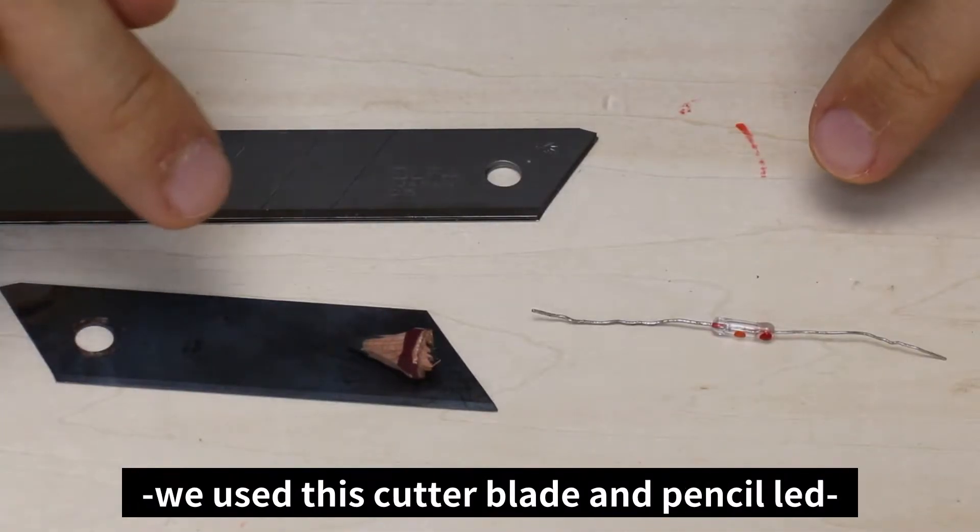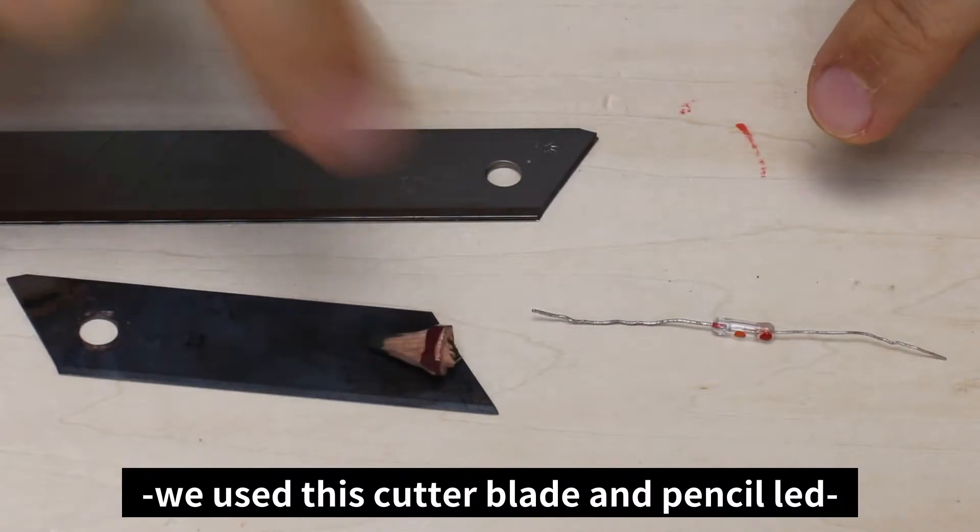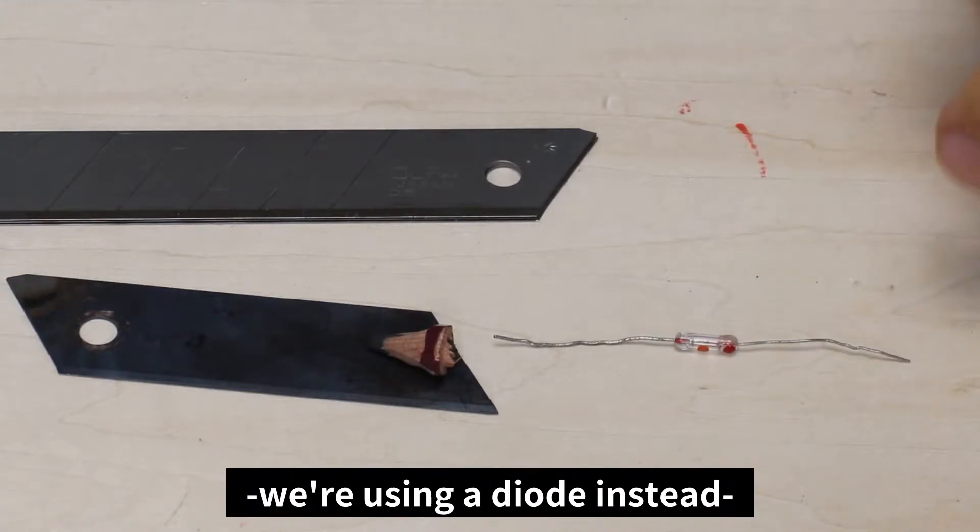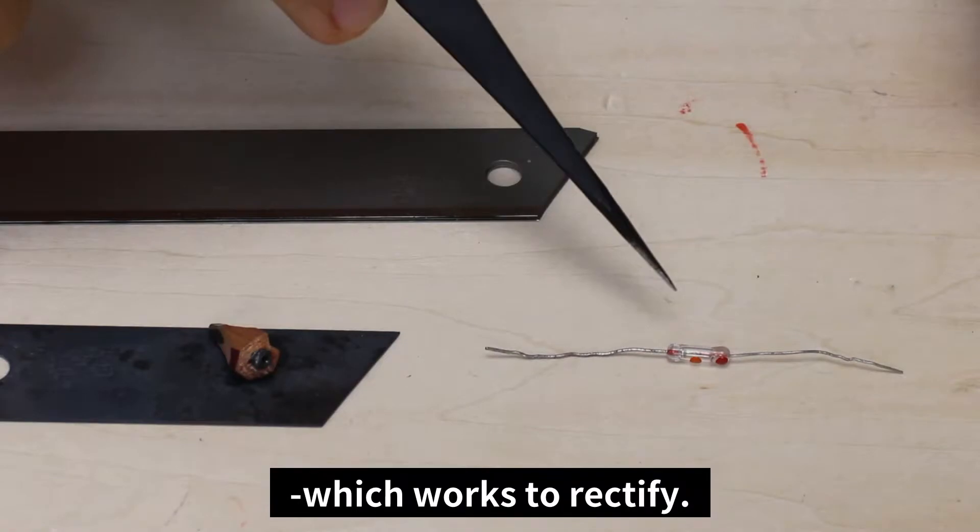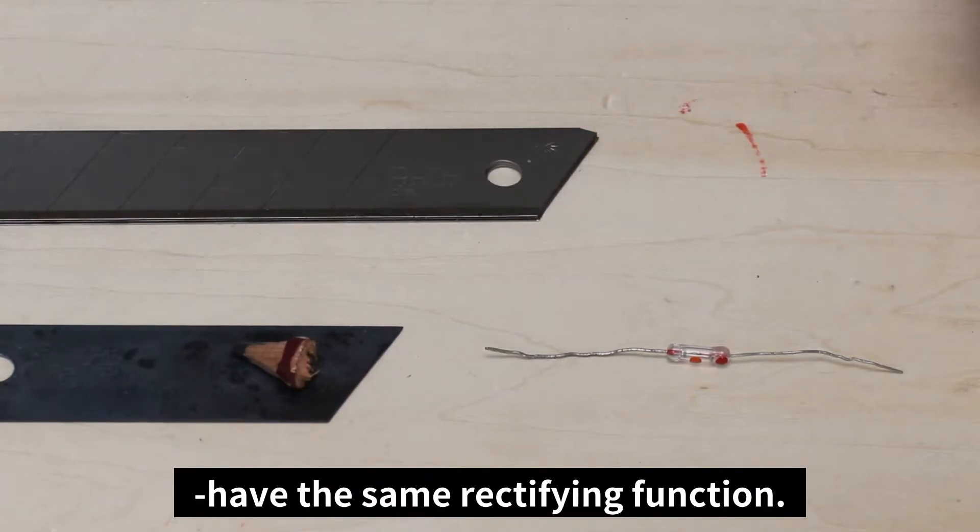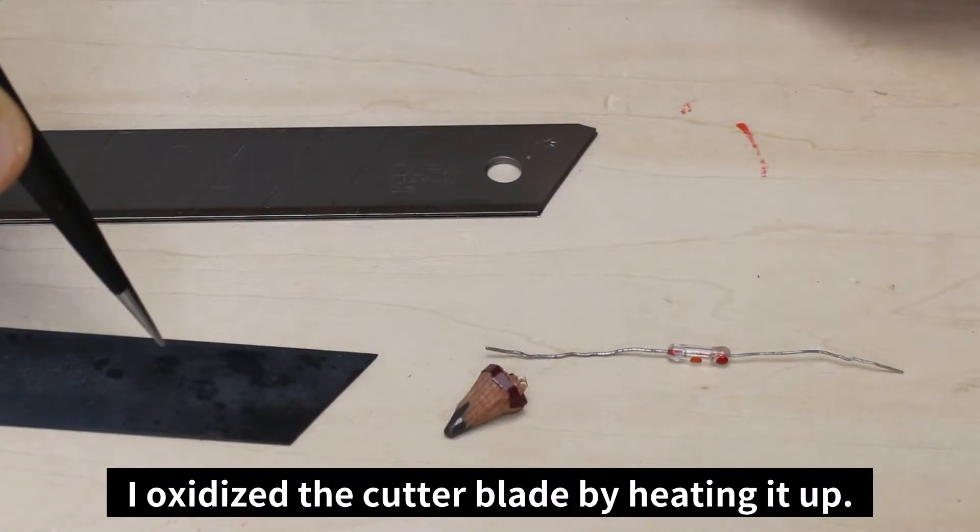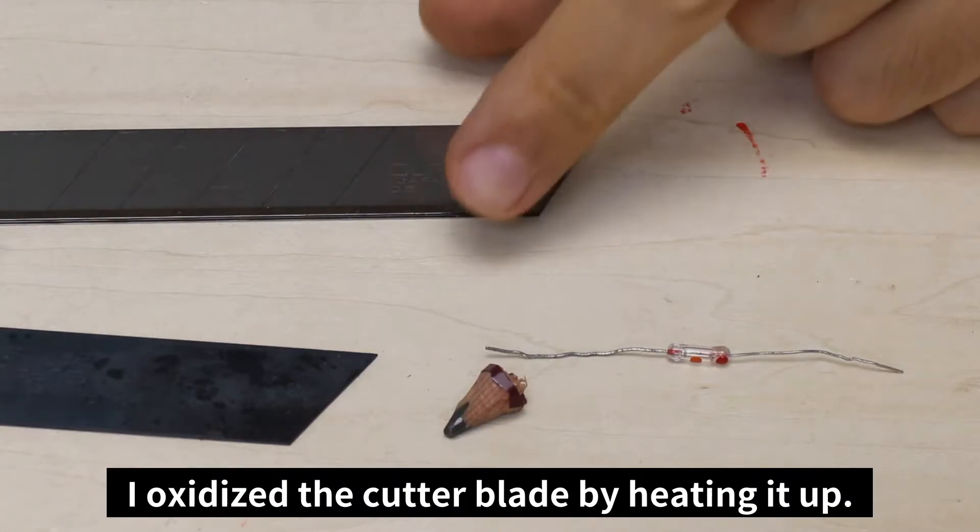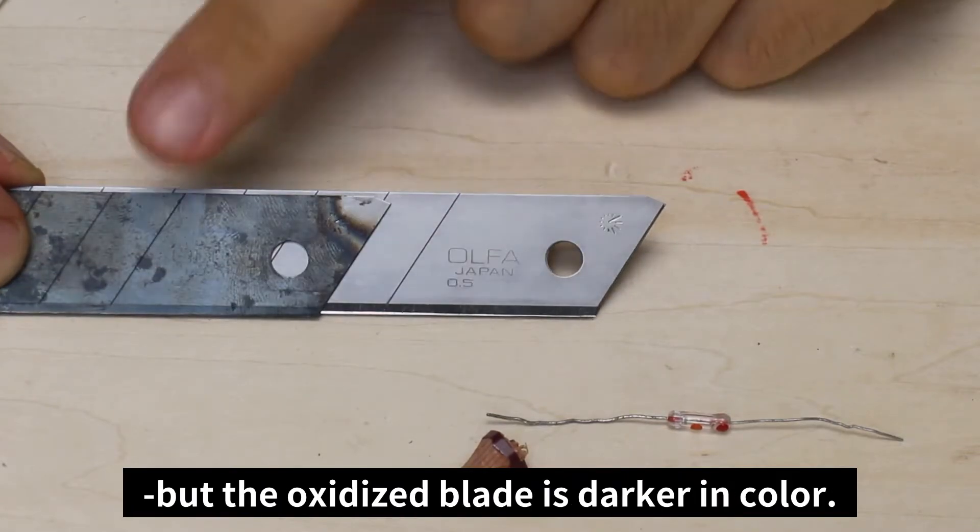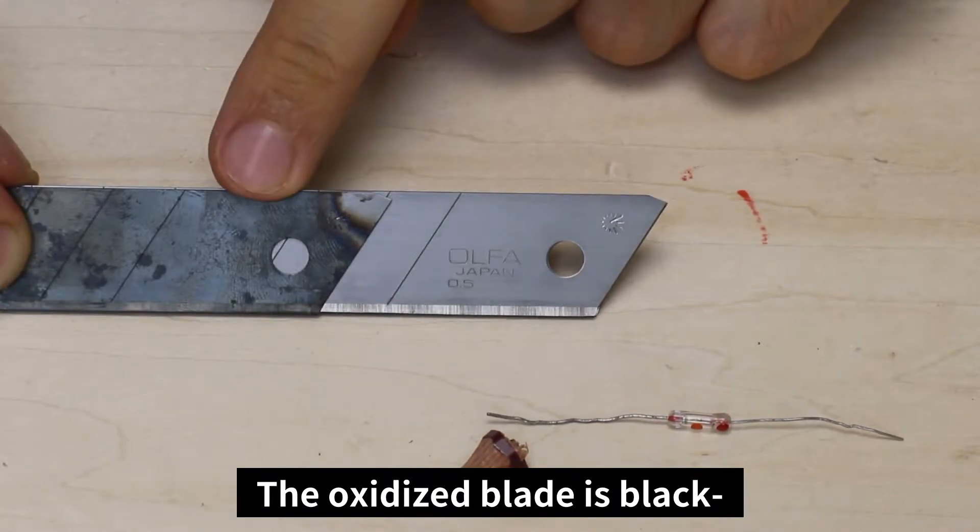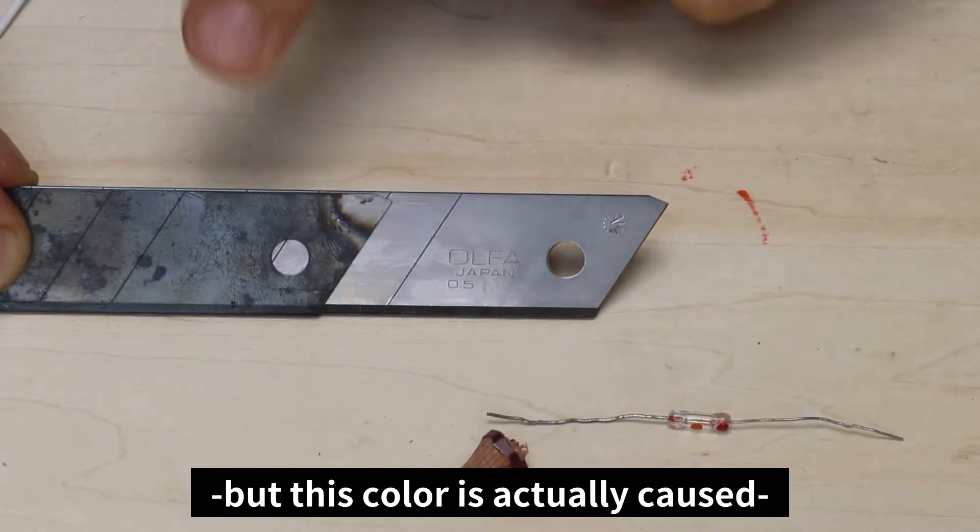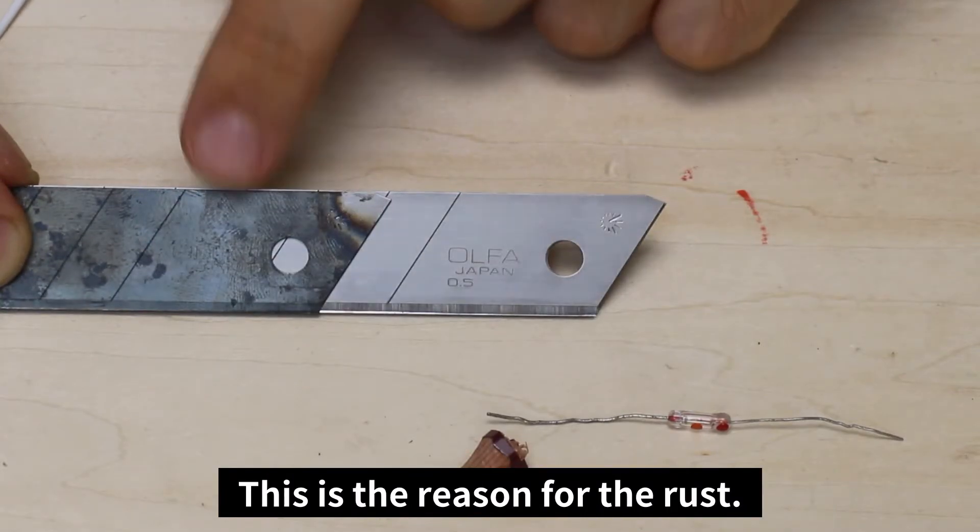In the trench radio we made previously, we used the cutter blade and pencil lead as a detector. In today's video, we're using a diode instead, which works to rectify. A heated cutter blade and pencil lead have the same rectifying function. I oxidized the cutter blade by heating it up. You might notice by comparing the oxidized blades and the new cutter blades, the oxidized blade is darker in color. The oxidized blade is black, but the color is actually caused by heating it up and cooling it down. This is the reason for the rust.